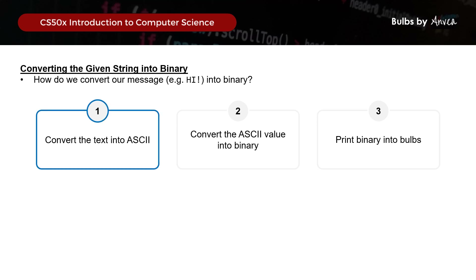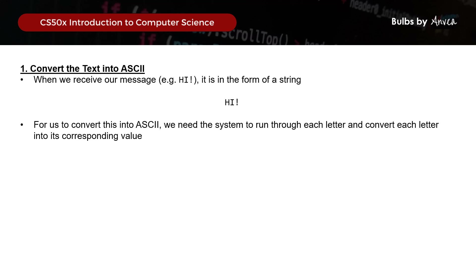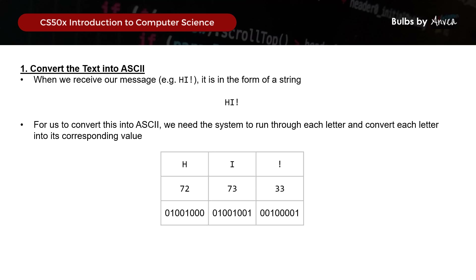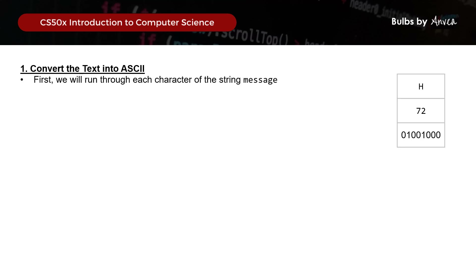Starting with the first step - converting text to ASCII. When we receive our message, it's in the form of a string. To convert each character into its corresponding ASCII value, we'll use a for loop since we're performing an action for every character. That's for int i = 0, where n equals the length of our string via strLength(message), and we'll repeat this loop as long as i is less than n. Every time we complete the loop, we increase i by 1 to move on to the next character.